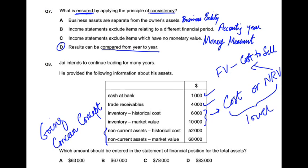न तो हमारी intention खराब है, न हमारी ability में कोई मسئلہ ہے — business چلتا رہے گا۔ یہ جو Titanic ہے، اس کے iceberg سے ٹکرانے کا کوئی chance نہیں، business روان دوان اپنی منزل کی طرف چلتا رہے گا۔ یہ قسم ہر سال اٹھاتے ہیں، اگلے بارہ مہینے کے لئے۔ یہ کہلاتا ہے going concern — business چلتا رہے گا، بند ہونے کے کوئی آثار نظر نہیں آ رہے۔